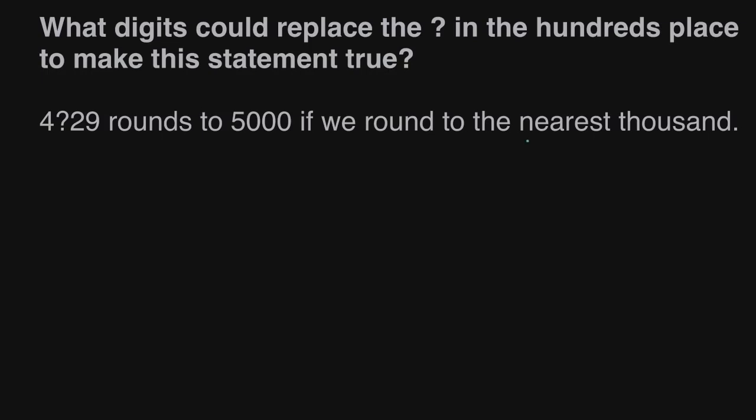So we want a number whose nearest thousand is 5,000. It's closer to 5,000 than any other thousand. And what we know about our number so far is it starts with 4,000. Then we'll fill in the digit for the hundreds and it ends with 29.